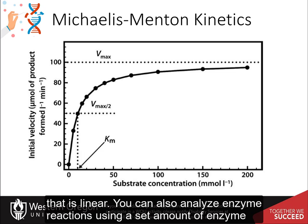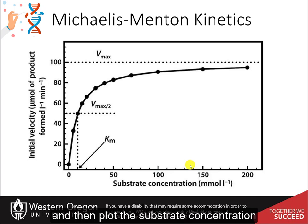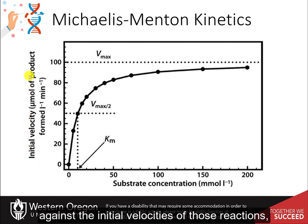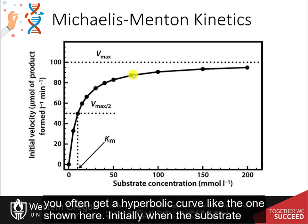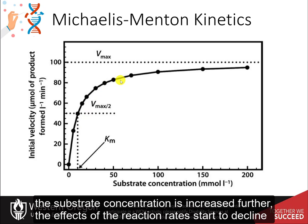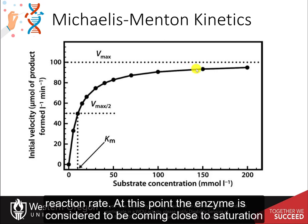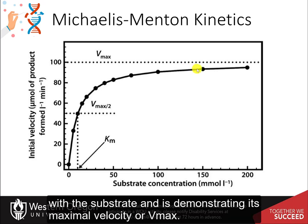You can also analyze enzyme reactions using a set amount of enzyme and then use different concentrations of substrate. If you do these types of reactions and then plot the substrate concentration against the initial velocities of those reactions, you will often get a hyperbolic curve like the one shown here. Initially, when the substrate concentration is increased, the rate of the reaction increases considerably. However, as the substrate concentration is increased further, the effects on the reaction rate start to decline until a stage is reached where increasing the substrate has little further effect on the reaction rate.